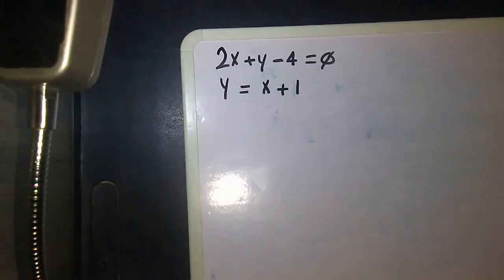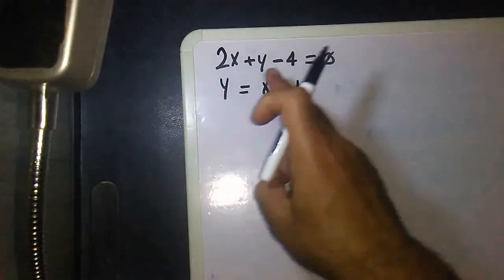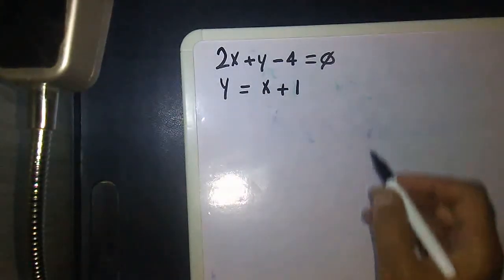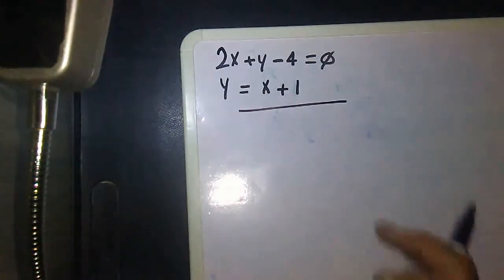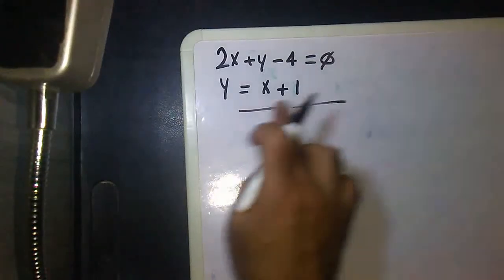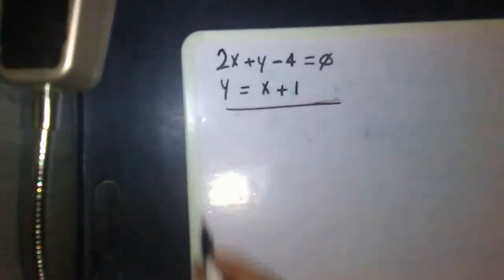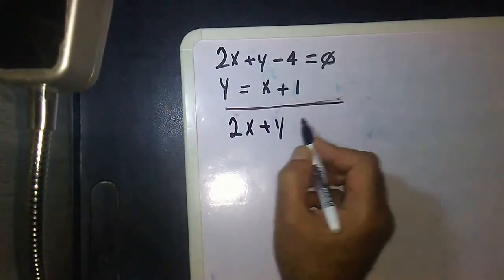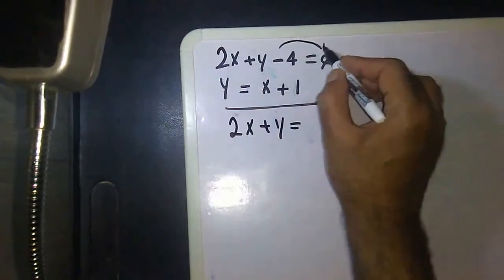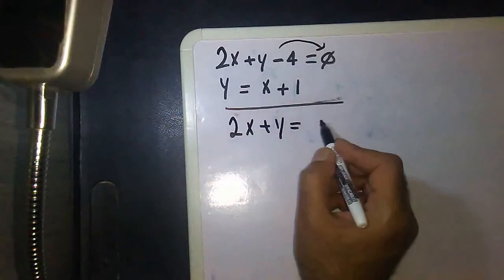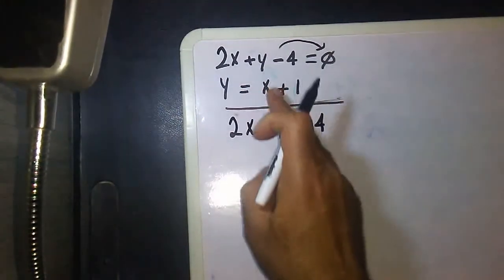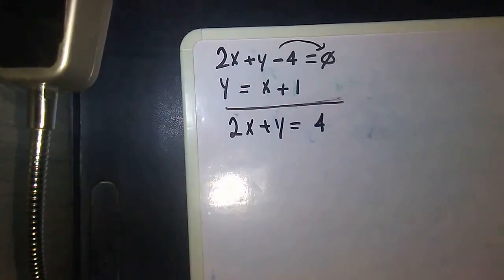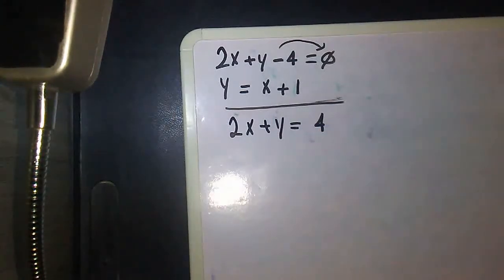The first equation — I said before that I have to put the numbers on one side and the variables on the other side. So the first thing in the solution: 2x plus y equals — I will shift the 4 to the other side — then it will be 4. So 2x plus y equals 4. Now I want the variables x and y on one side and the absolute numbers, like the 4, on the other side.